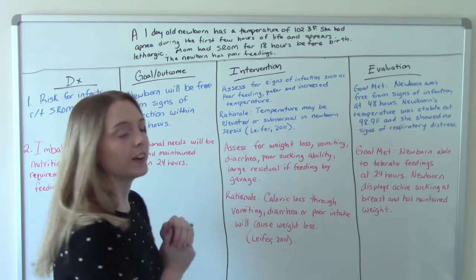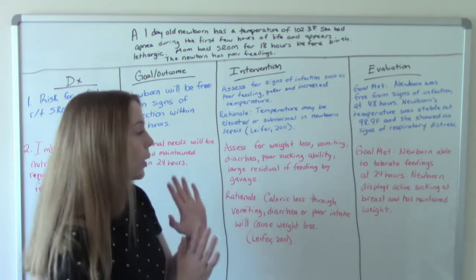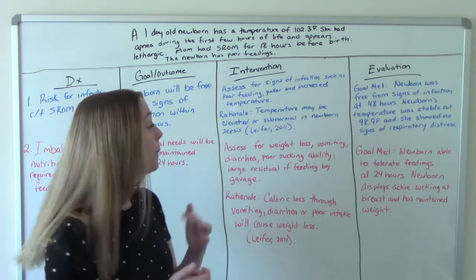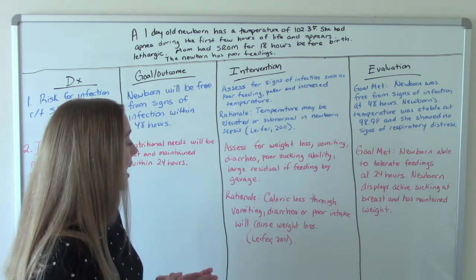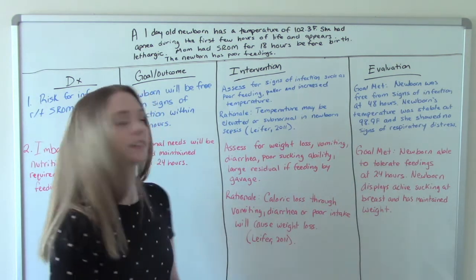So what are we going to do for our intervention? Assess for weight loss, vomiting, diarrhea, poor sucking ability, and then large residuals of feedings by gavage.